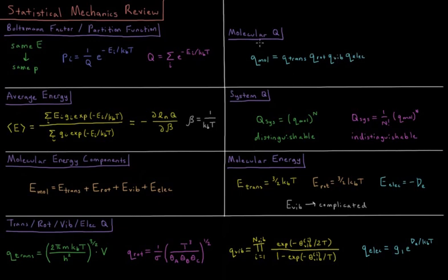If we have a system of molecules, like a large number of particles in some ideal gas, then the partition function of the system is each molecular partition function to the nth power if they're distinguishable, or if they're indistinguishable as most molecules are, it's 1 over n factorial times the individual partition function to the nth power.